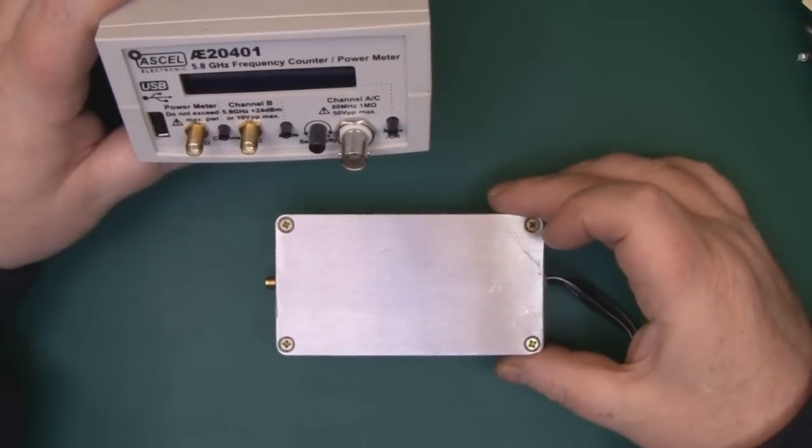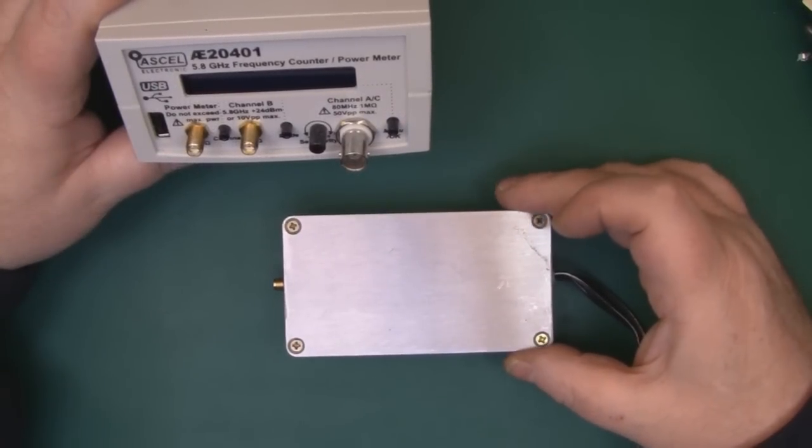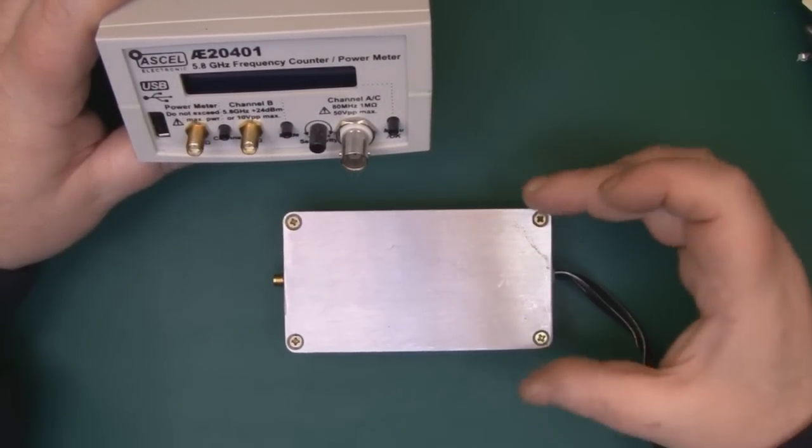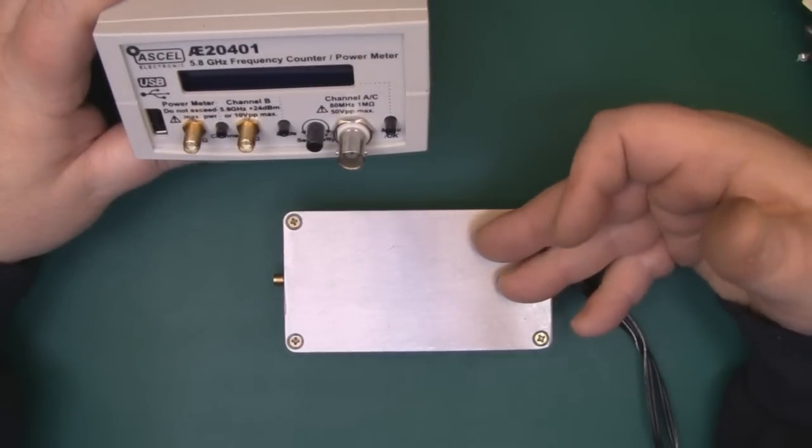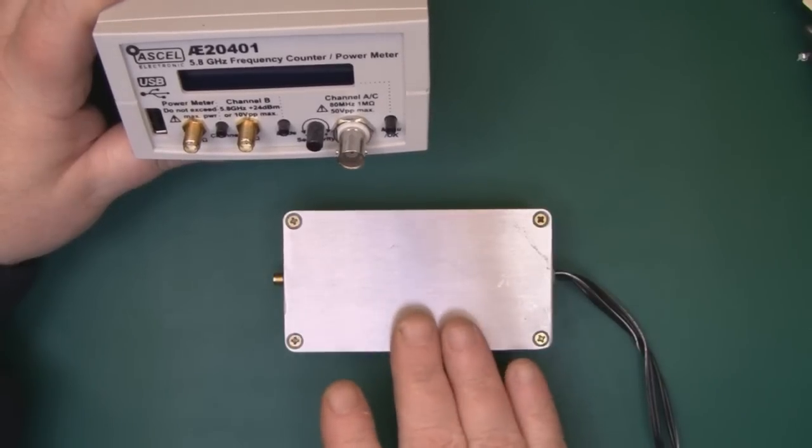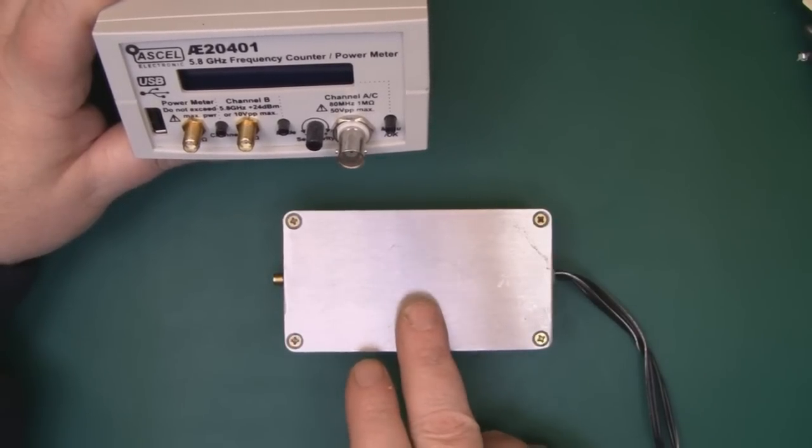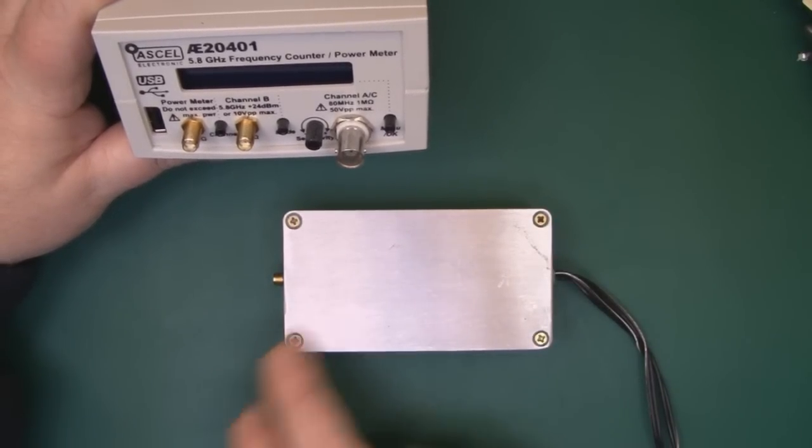Now what I've got here is a 2.4 gigahertz signal source that is exactly 600 milliwatts. So what that actually means is we know that we're pumping in exactly 600 milliwatts at the one end of the coax.